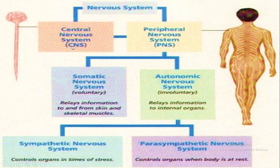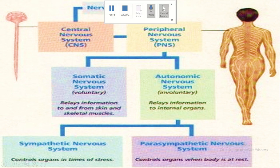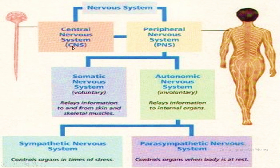There are two types of Nervous System. This is the basic concept of the Nervous System. The Nervous System is divided into two: Central Nervous System and Peripheral Nervous System.